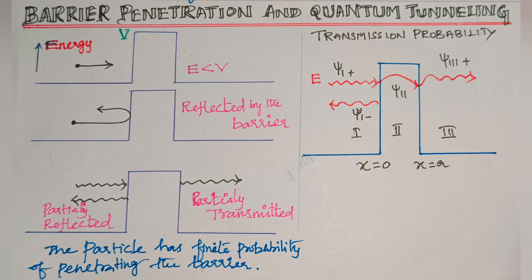According to classical ideas, a particle striking a hard wall has no chance to leak through it. But the behavior of a quantum particle is different — due to the wave nature associated with it, the particle can penetrate through this potential barrier. In classical mechanics, an electron hitting a barrier cannot pass through.